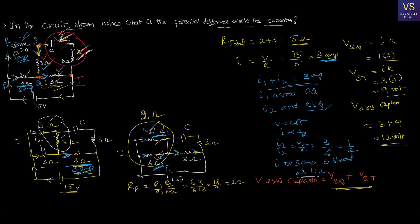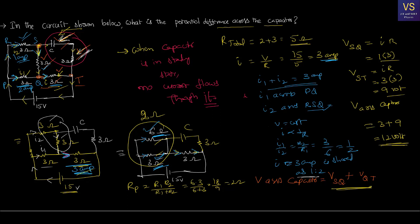So the potential drop across the capacitor is 12 volts. You can revisit the problem if you didn't get it the first time, as many concepts are involved. The most important concept here is that when a capacitor is in steady state, no current flows through it. Everything else follows from general current electricity principles. Thank you for watching.